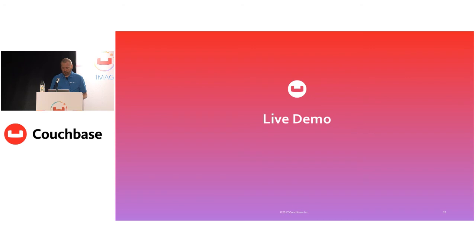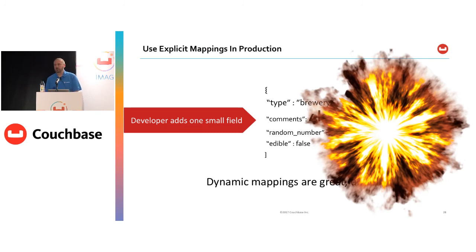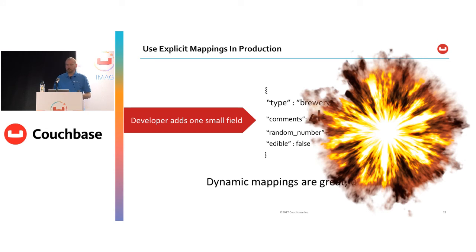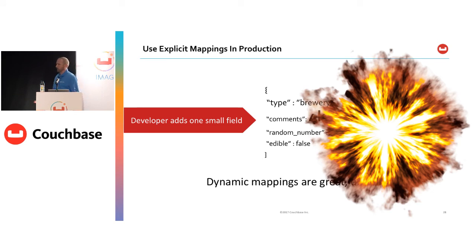Let's look at some best practices. The first is we always recommend using explicit mappings when working with data in production. The dynamic capability is nice to get started quickly without knowing how anything works, but what can happen is a developer adds a field with a bunch of text, and if you have a million documents and someone adds 4K of text in production, all of a sudden your indexer is taking up all the CPU — and that's going to blow up in your face. If you use explicit mappings, a new field showing up won't be a problem because it will always be ignored by default. So in production, always use explicit mappings.